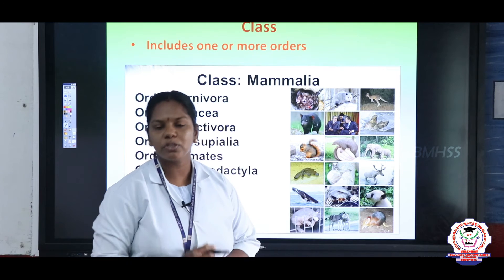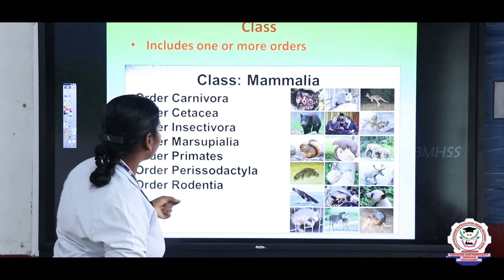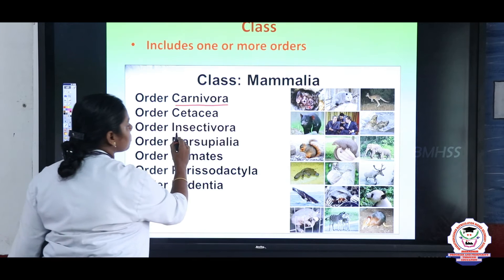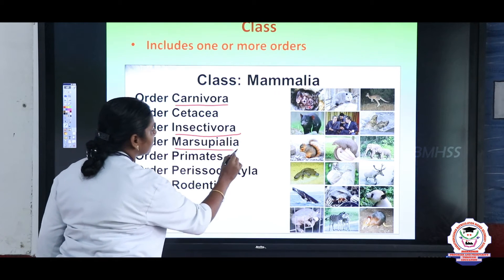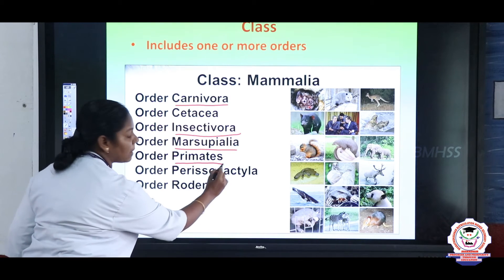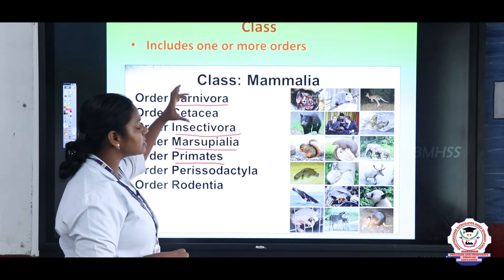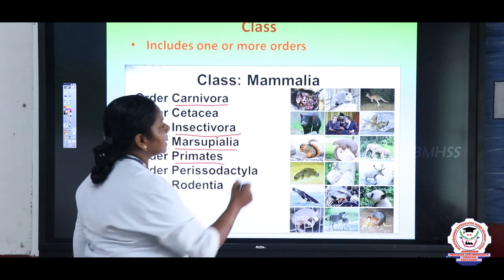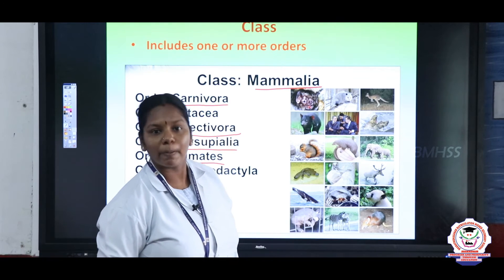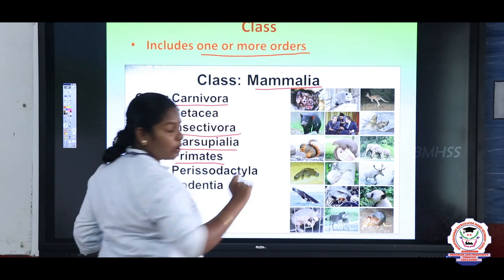Two or more orders combined together form a class. For example, order Carnivora — flesh-eating — along with other orders such as Insectivora — insects — Marsupialia — with a long tail, kangaroo comes under Marsupialia — and Primates — monkeys, and we humans are also included in the order Primates — all these orders combined form the single class Mammalia. Organisms with mammary glands are classified under class Mammalia.